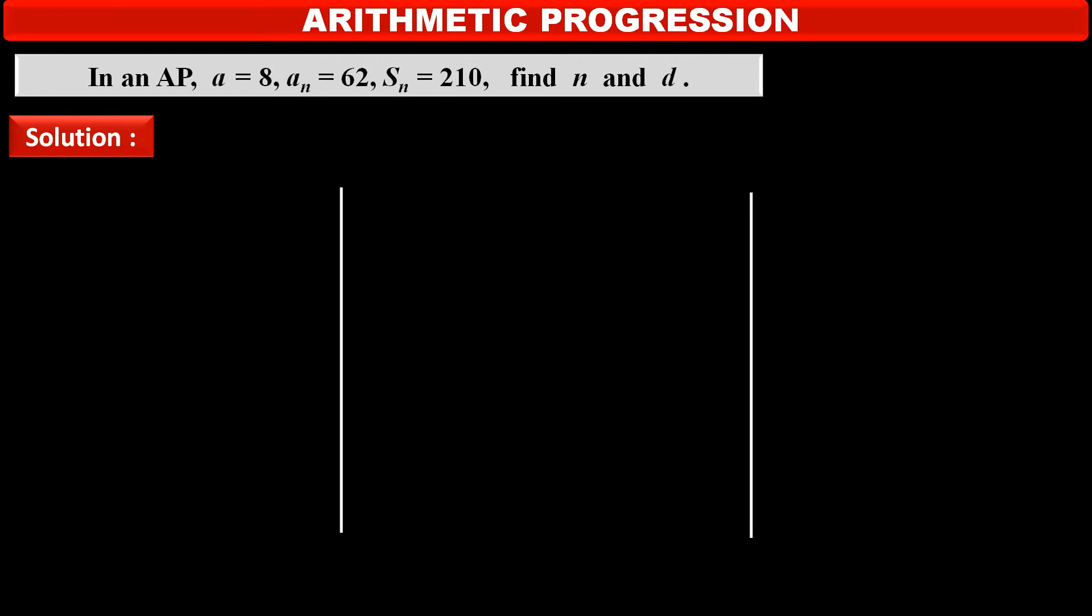In an AP, A is equal to 8, AN is equal to 62, SN is equal to 210. We have to find N number of terms and D, common difference.